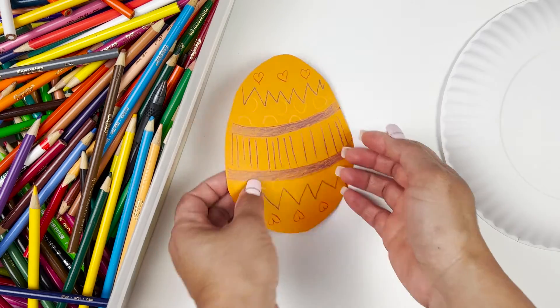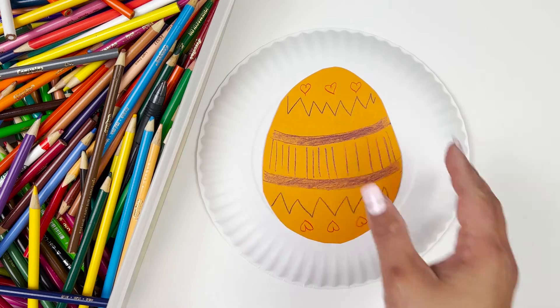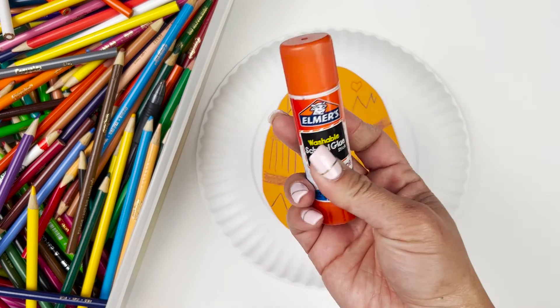Now, you're going to take your decorated egg and you're going to glue it onto the bottom side of the paper plate using your glue stick.